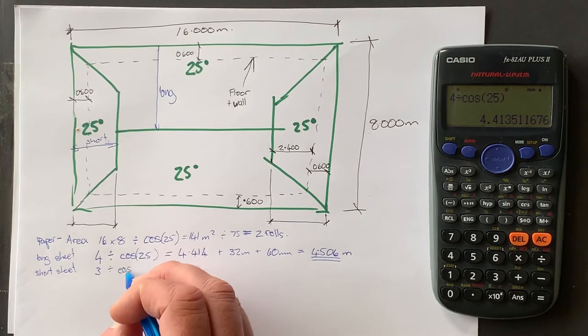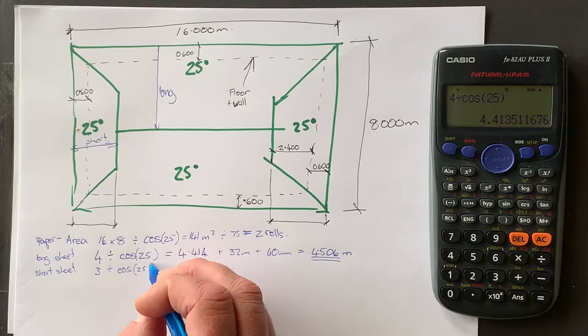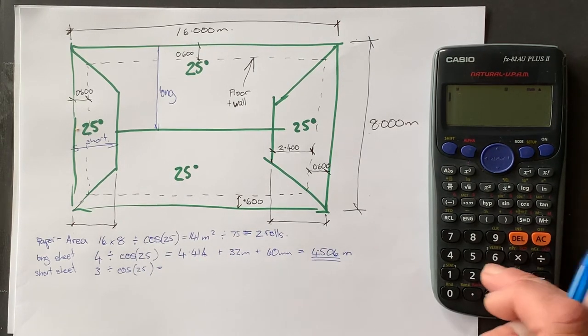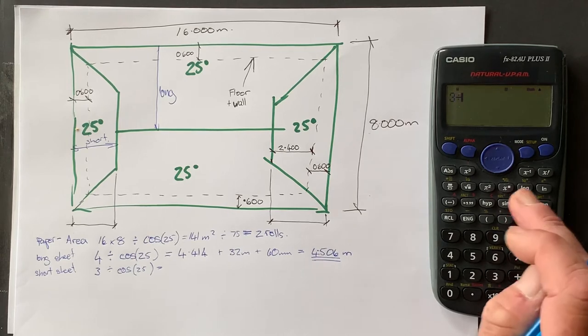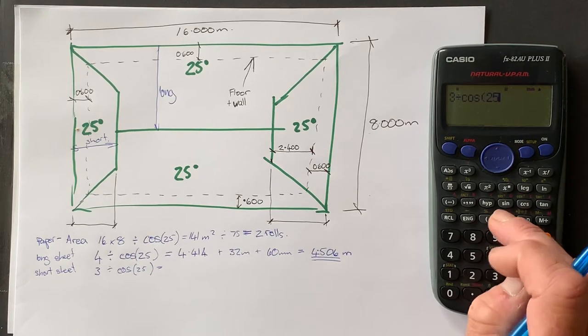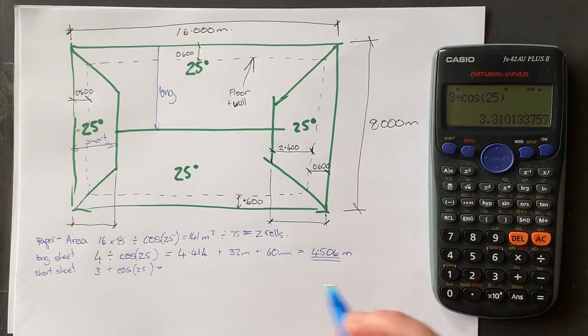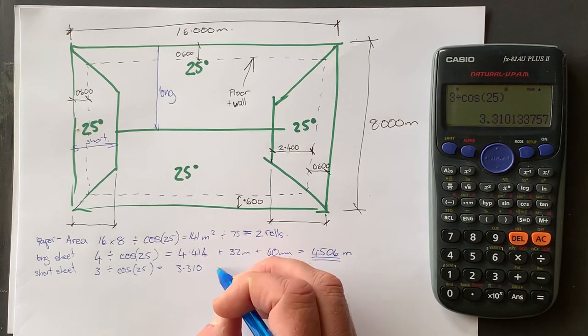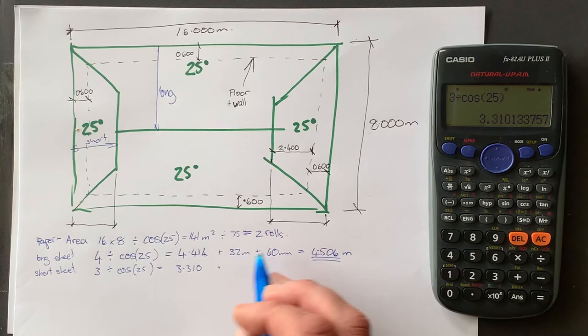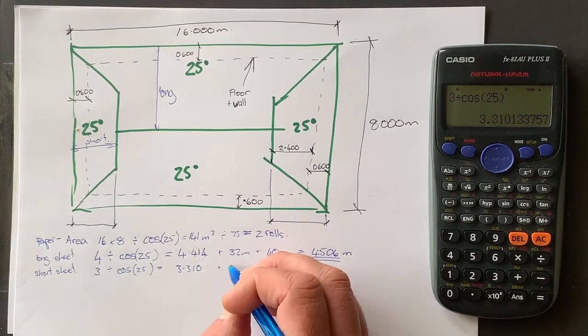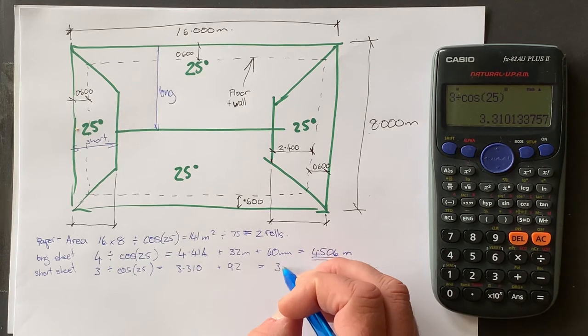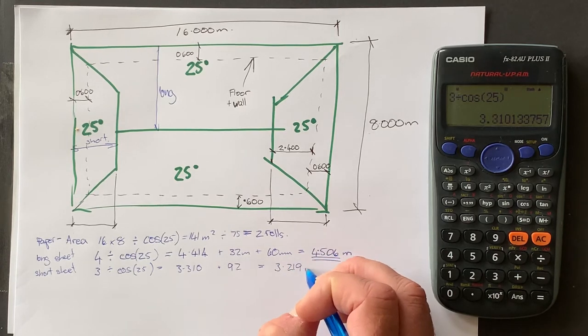So I do the same process, three divided by cosine 25 equals, three divided by cosine 25 equals 3.310 plus 92 again. And that equals 3.219 meters.